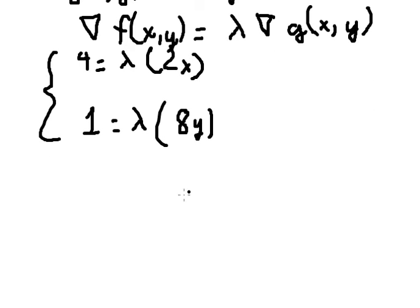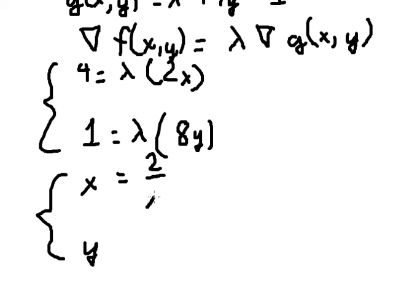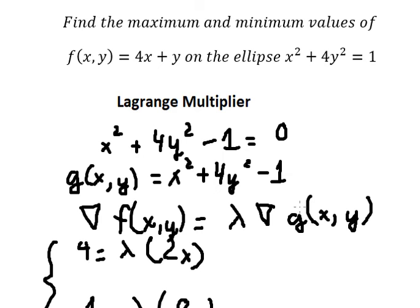Now after we have everything, we need to divide both sides — by two lambda and by eight lambda — and we can find the values of x and y. For x that is two over lambda, and for y that is one over eight lambda. So we have two lambda here and this function here.